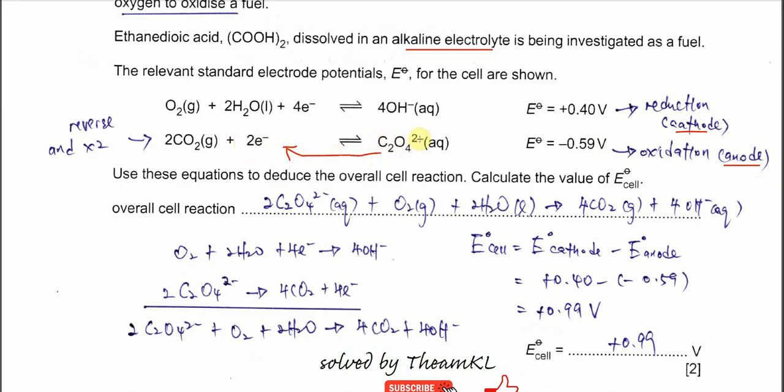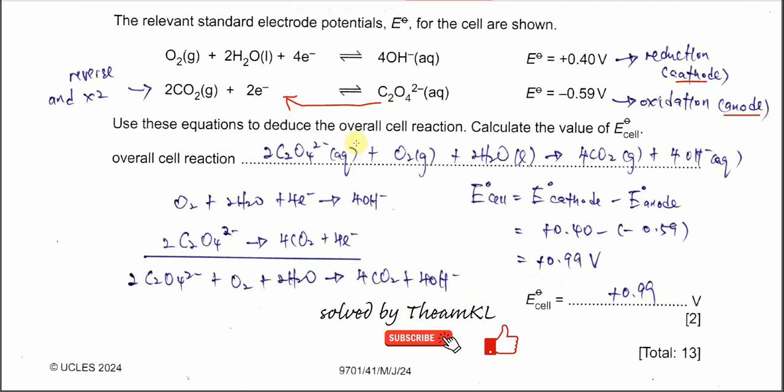The C2O4²⁻ now will form CO2 and two electrons. To write the overall cell reaction equation, the first one stays because it's the cathode. The second you need to reverse and multiply by two because we have four electrons here. After that you get this equation. Combine these two half equations and eliminate the electrons to get the overall equation. To calculate E° cell, use E° cathode minus E° anode. Cathode is this one, so use 0.40 minus anode -0.59, therefore you get positive 0.99 volts. Okay, that's all, thank you.